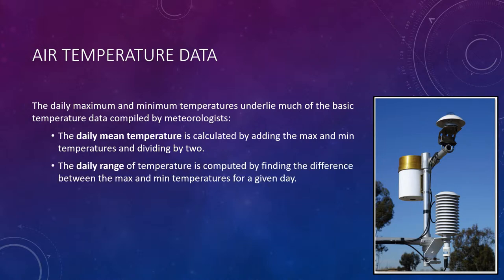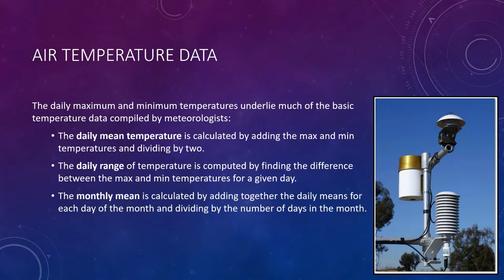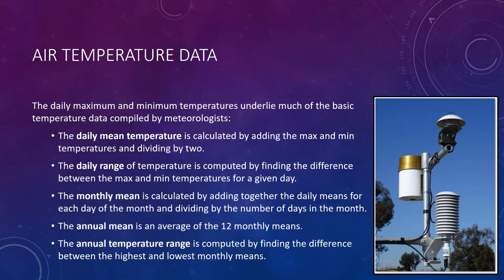The daily range of temperature is computed by finding the difference between the maximum and minimum temperatures for a given day. The monthly mean is calculated by adding together the daily means for each day of the month and dividing by the number of days in that month. The annual mean is an average of the 12 monthly means, and the annual temperature range is computed by finding the difference between the highest and lowest monthly means.